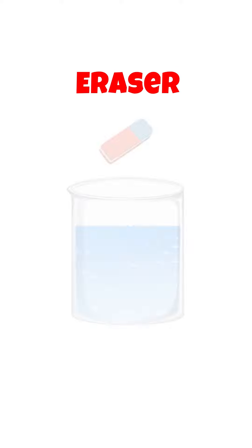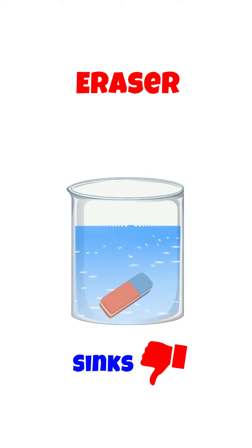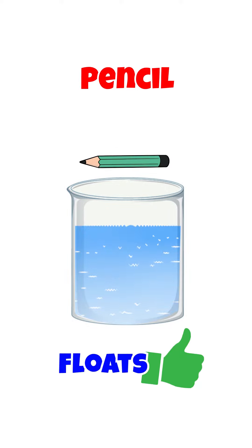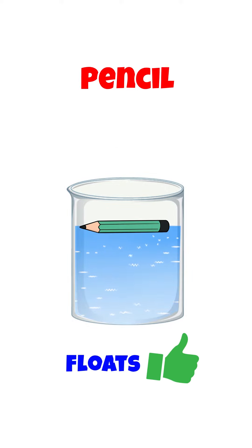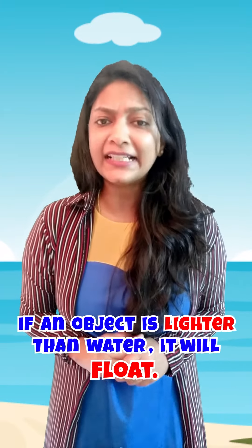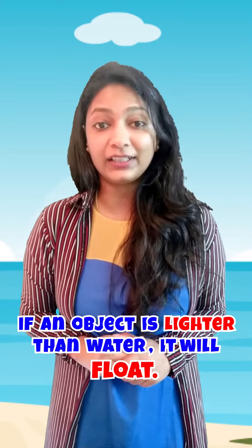Eraser — it sinks, as it is heavier than water. Pencil — it floats, as it is lighter than water. So we learned that some things float and some things sink in water. If an object is lighter than water, it floats; if it is heavier than water, it will sink.